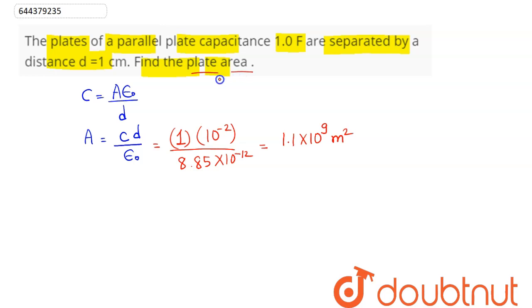So we can say here this is the area of a square plate of side longer than, let's say, 30 kilometer approximately. Hence this shows how big a one farad capacitor will be. So this is our answer.